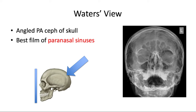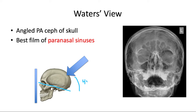Now let's talk about some specialized views that can appear on the board exam. The Waters view is the standard x-ray of choice for showing an anterior view of the paranasal sinuses, midface, and orbits — it frames everything nicely around the cranial vault. It's a PA ceph taken at about a 45-degree angle to the orbitomedial line, with the patient's face against the film and the x-ray source coming from behind the head. This is the best film for radiographic diagnosis of midfacial fractures, sinus infections, and lesions of the maxillary sinus.